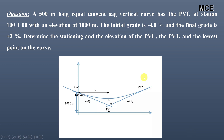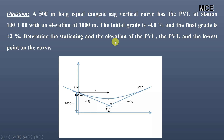I have been given a question which states that a 500-meter long equal tangent sag vertical curve has the PVC — the point of the vertical curve — at a station of 100+00 with an elevation of 1000 meters. The initial grade is minus 4% and the final grade is plus 2%. We have to find the stationing and the elevation of PVI (point of vertical intersection), PVT (point of vertical tangency), and the lowest point on the curve.